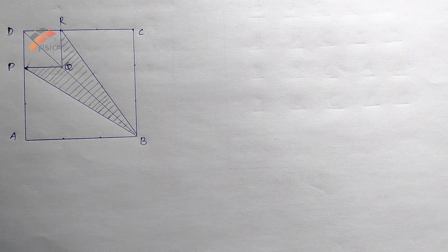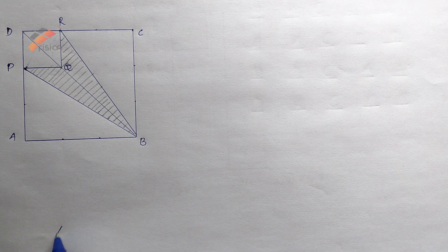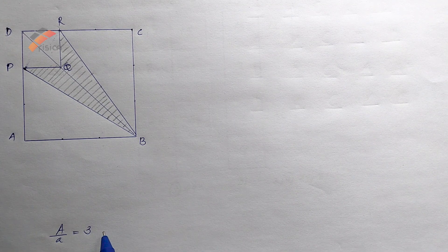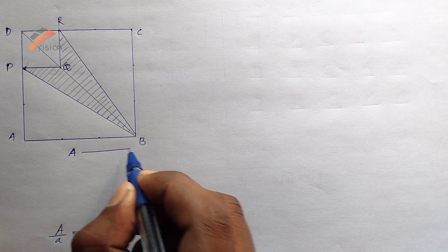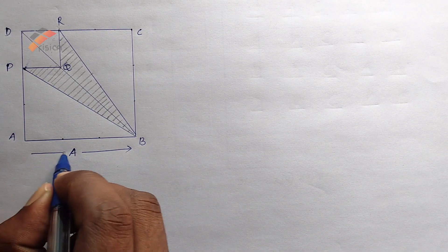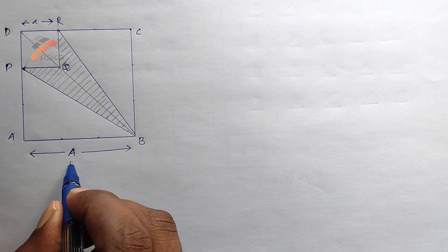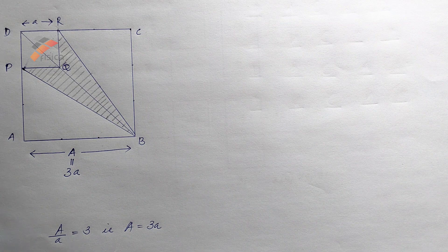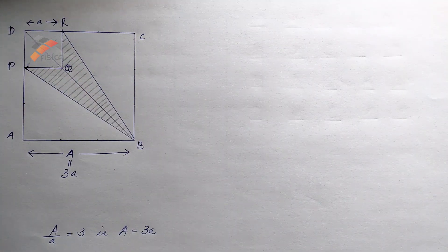We are asked to find out the ratio of the area of the shaded portion to the area of quadrilateral ABCD. The condition given is A divided by a equal to 3, that is capital A equal to 3a, where capital A is the side length of the big square and small a is the side length of the small square. So this side is equal to 3a.